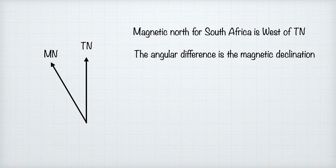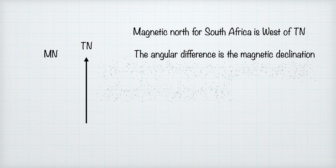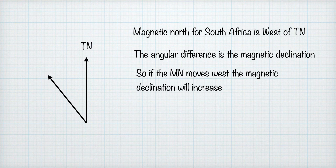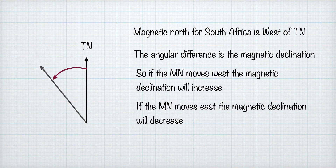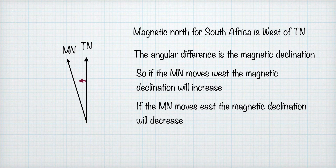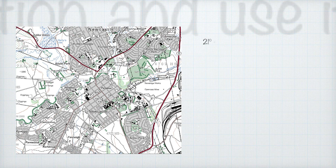Because the magnetic north pole moves, the magnetic declination given on a map becomes outdated over time — it's accurate only at the time the map was made. If magnetic north moves westward, the magnetic declination increases. If it moves eastward, the declination decreases. That is why we need to update the magnetic declination before working out a compass bearing.